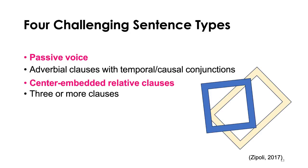When we're thinking about English specifically, these are sentence types that do tend to have an impact on comprehension and expression: sentences with passive voice, sentences with adverbial clauses and temporal and causal conjunctions, sentences with center-embedded relative clauses, and sentences with three or more clauses.